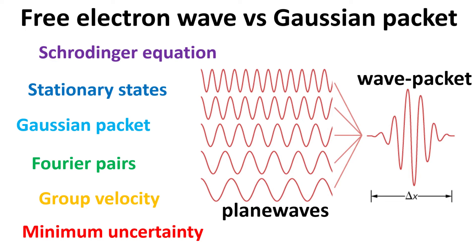For example, the particle velocities and the distinction between phase and group velocities, their probability representation and spreads in position and momentum space, and how the Gaussian packet allows one to realize the minimum uncertainty state. Let's begin.